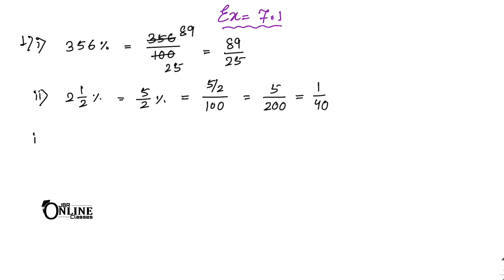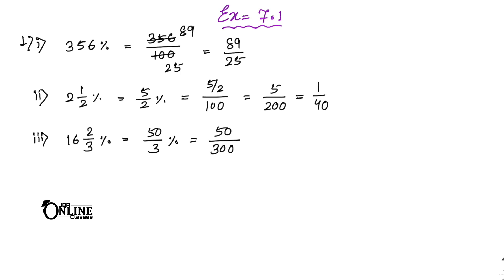Number three: 16 whole 2 by 3 percent. You first convert it to an improper fraction: 50 by 3 percent. That equals 50 by 300, because 3 multiplied by 100 becomes 300. That simplifies to 1 by 6.